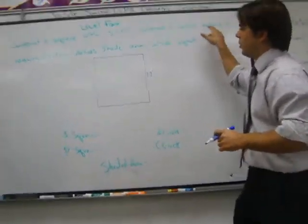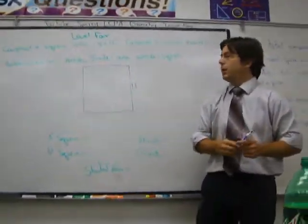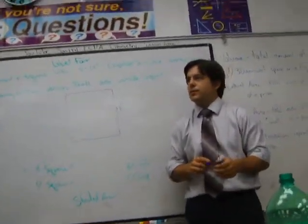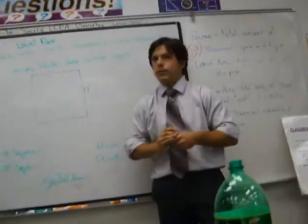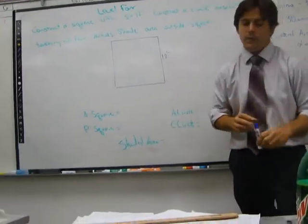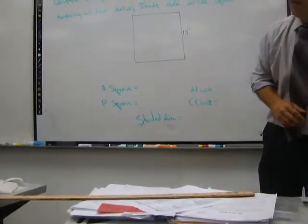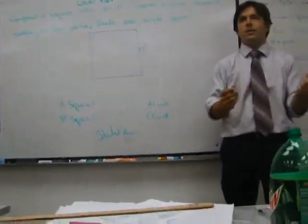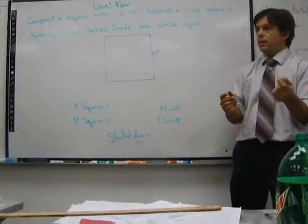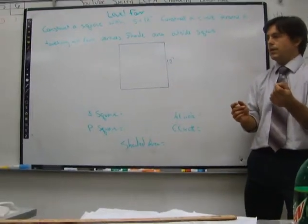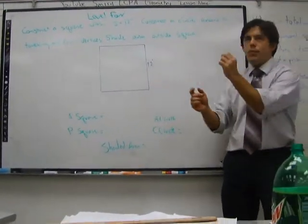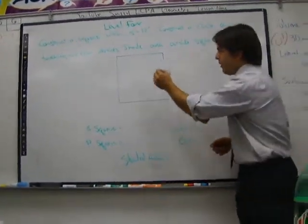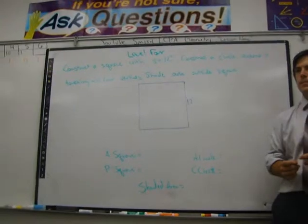Now construct a circle around it touching all four vertices. The first thing that gets a lot of people is knowing what to do here. How do I construct a circle, first of all? I use what? Compass. But where do I put the point? In the middle. How am I going to do that?